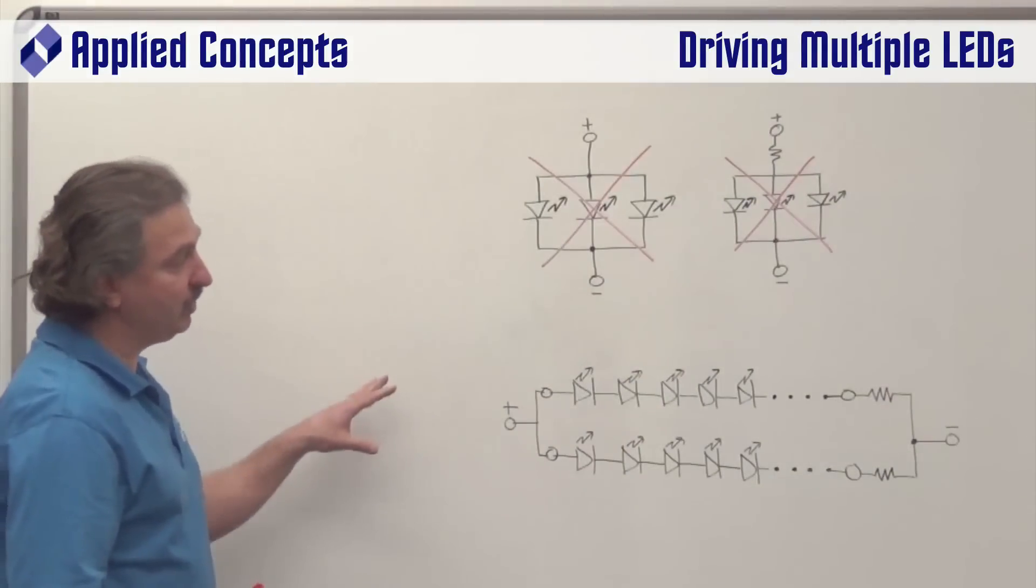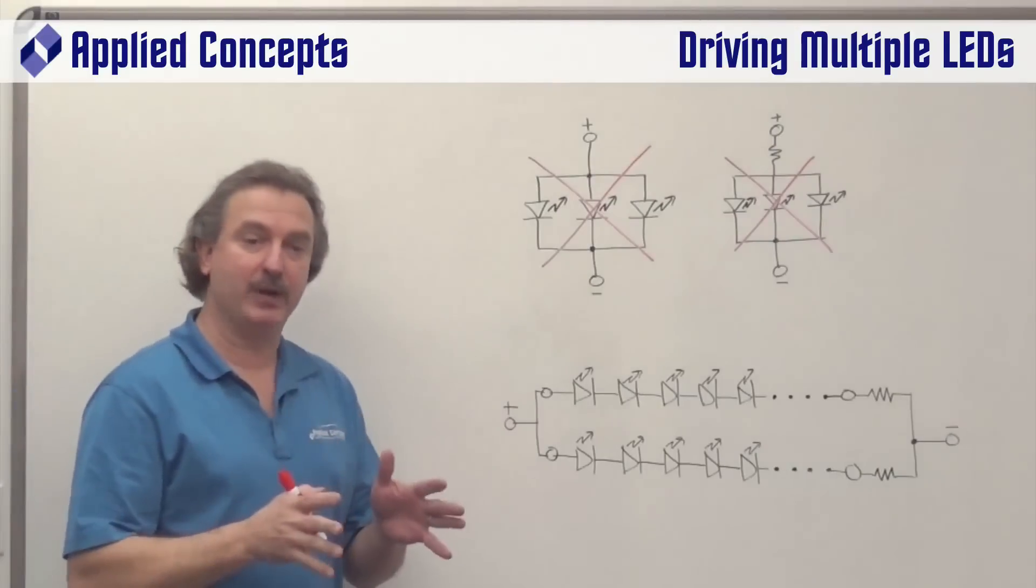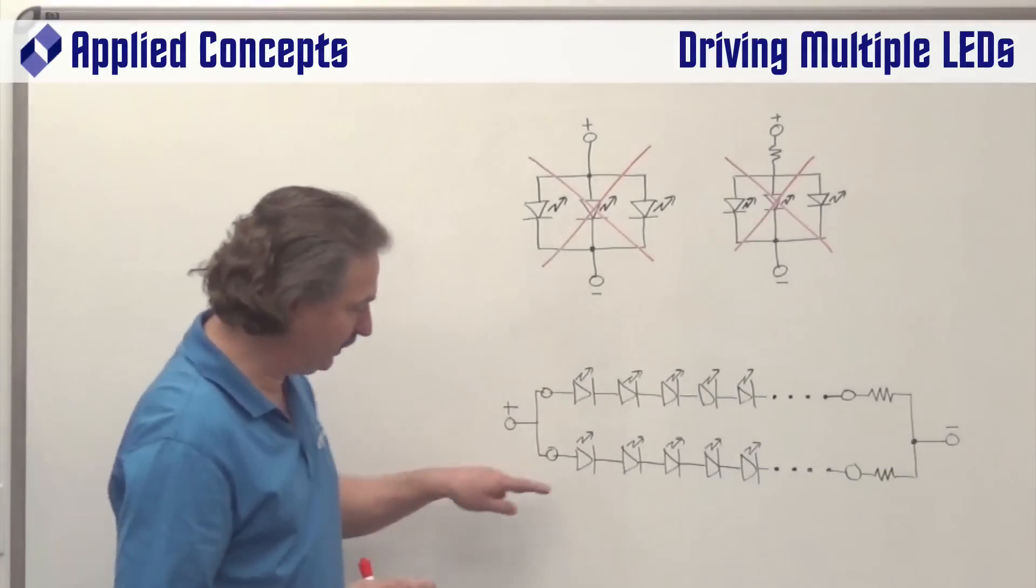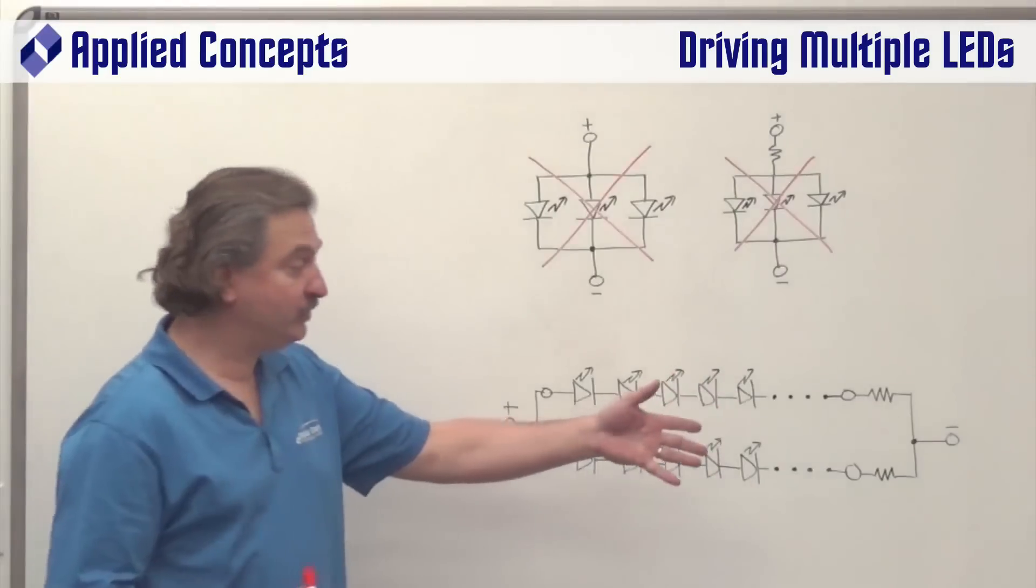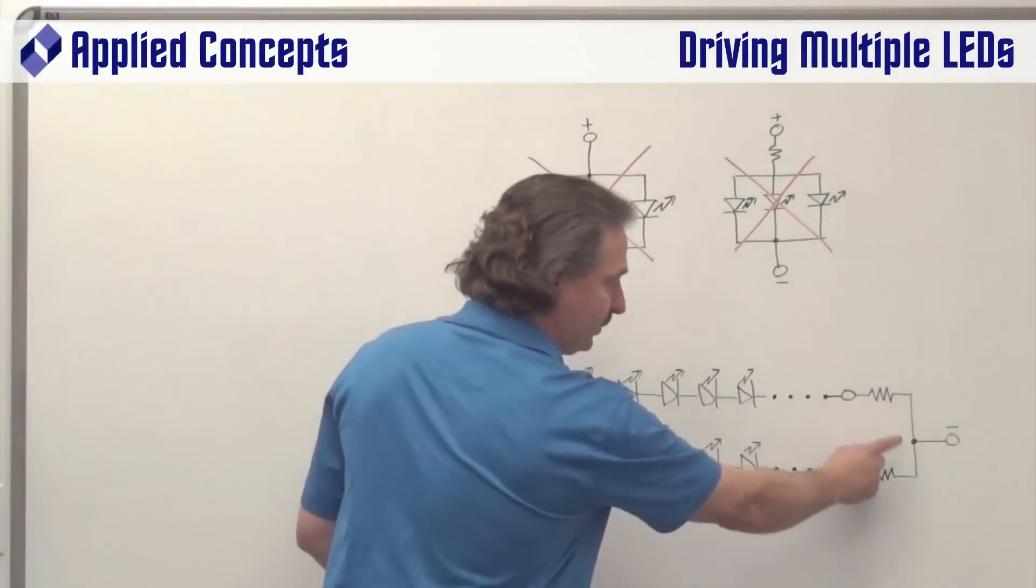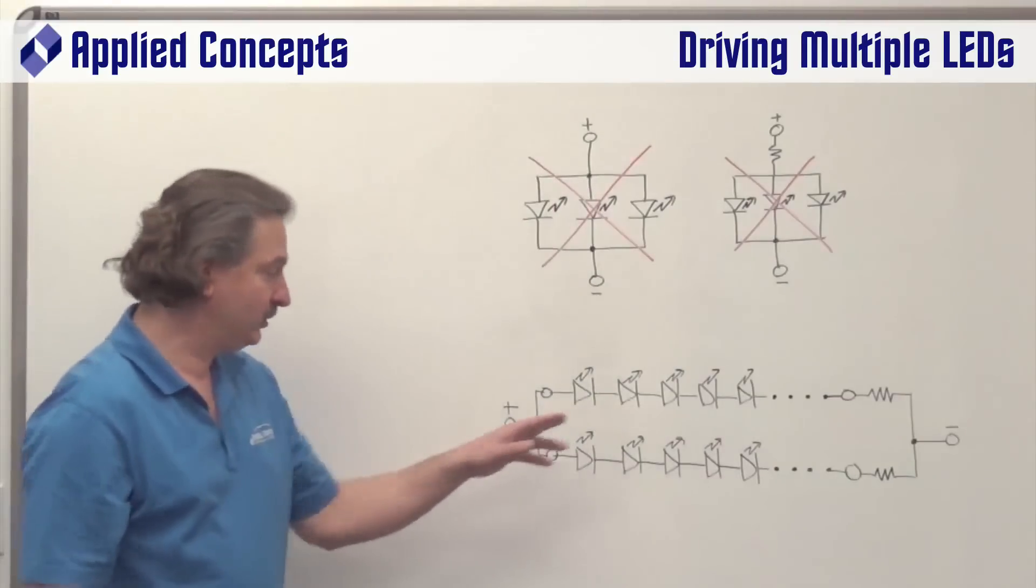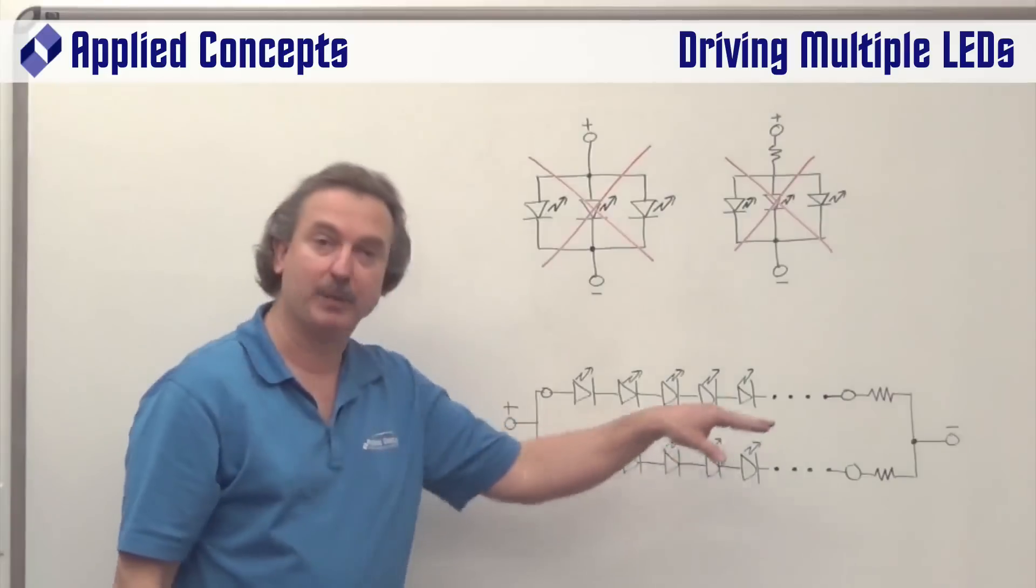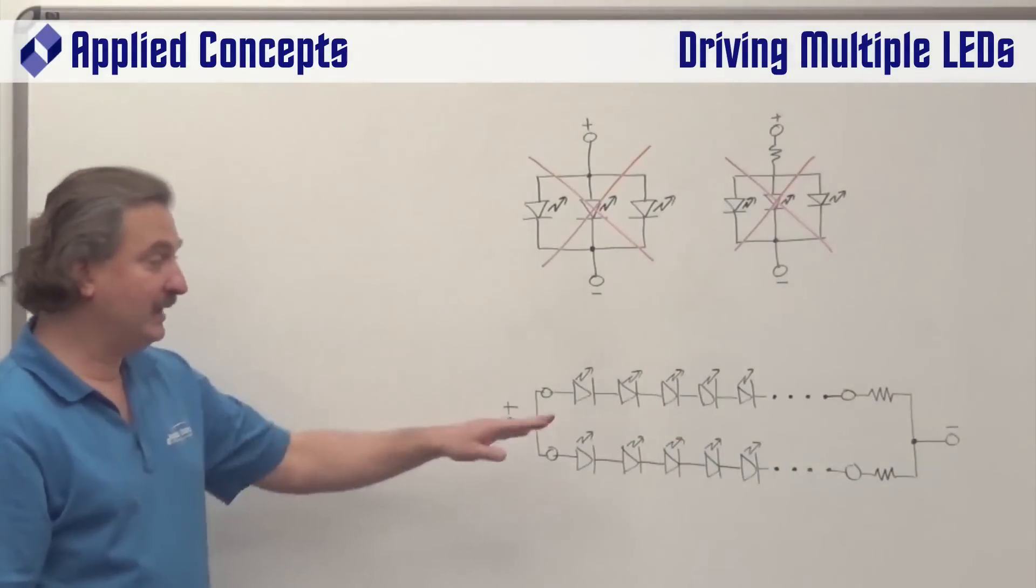The only way that you're guaranteed to share current is if somehow you can have independent branches, which could consist of one LED, but often many, as we show here. And if you were to use an inefficient method of a simple current limiting resistor, then you would place a current limiting resistor in each branch, place your fixed voltage source across,